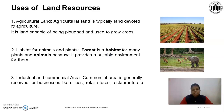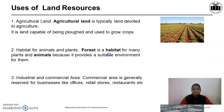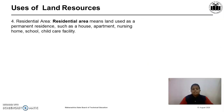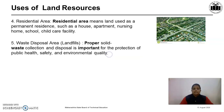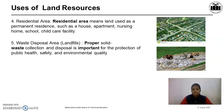Land is also used for industrial and commercial areas — commercial areas are generally reserved for businesses like offices, retail stores, restaurants, etc. Residential areas mean land used as permanent residence, such as houses, apartments, nursing homes, schools, child care facilities, etc. Another important use of land is as a waste disposal area called landfills. Proper solid waste collection and disposal is important for the protection of public health, safety, and environmental quality. The garbage collected from cities is dumped away from the city in a special area called a landfill.